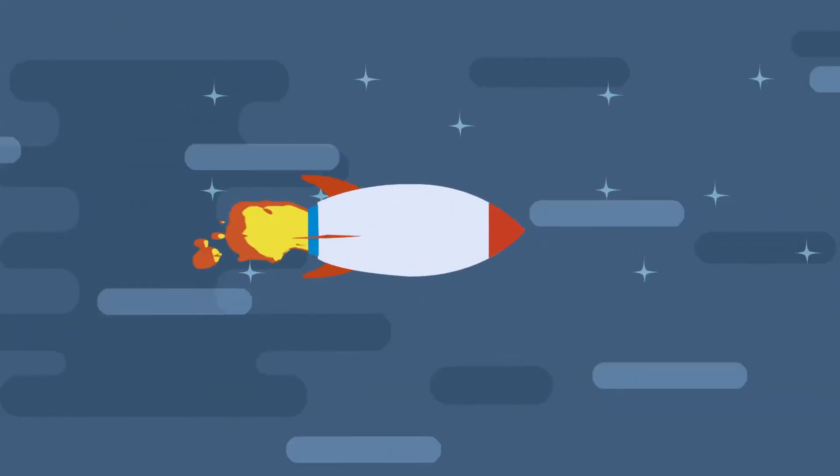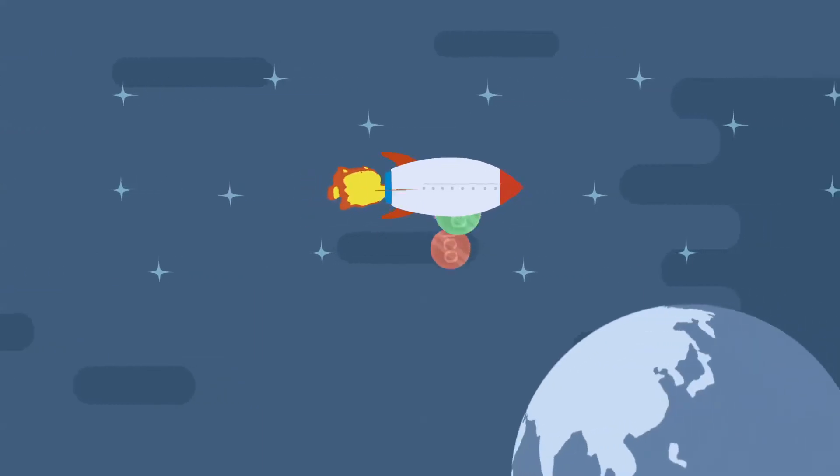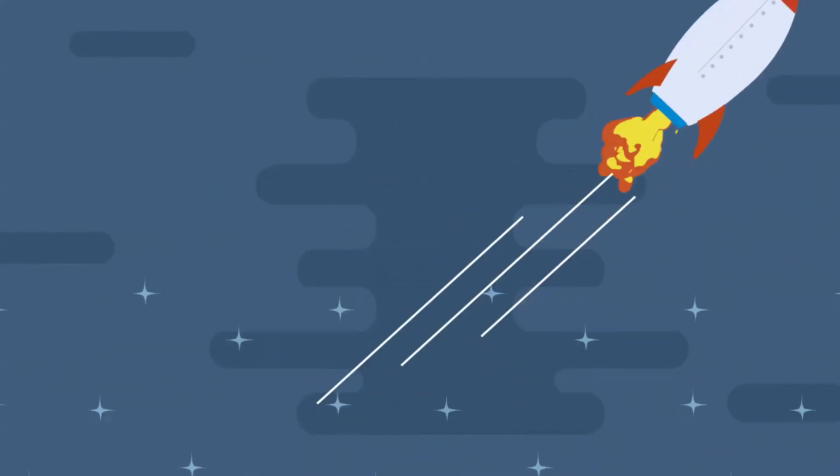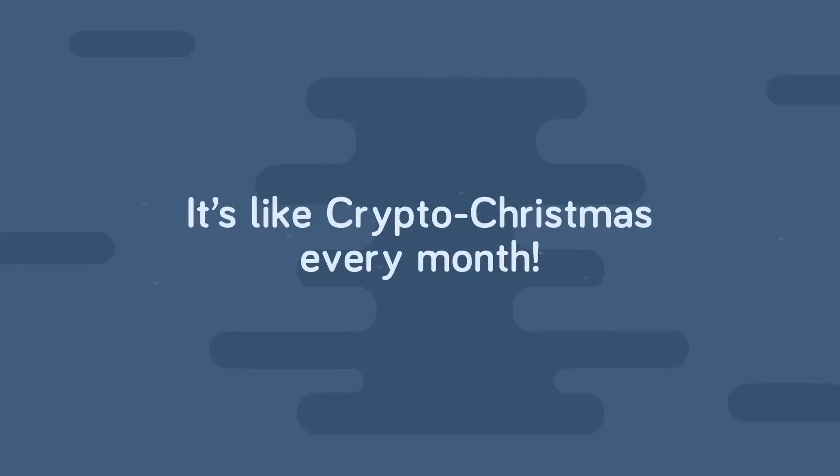The Rocket Coin is the first and only coin in the world distributing new coins to its holders, giving you a variety of vetted coins for the price of one. It's like crypto Christmas every month.